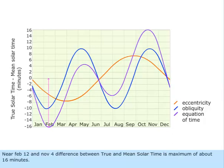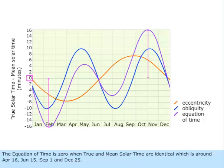Near February 12th and November 4th, difference between true and mean solar time is maximum of about 16 minutes. The equation of time is zero when true and mean solar time are identical, which is around April 16th, June 15th, September 1st, and December 25th.